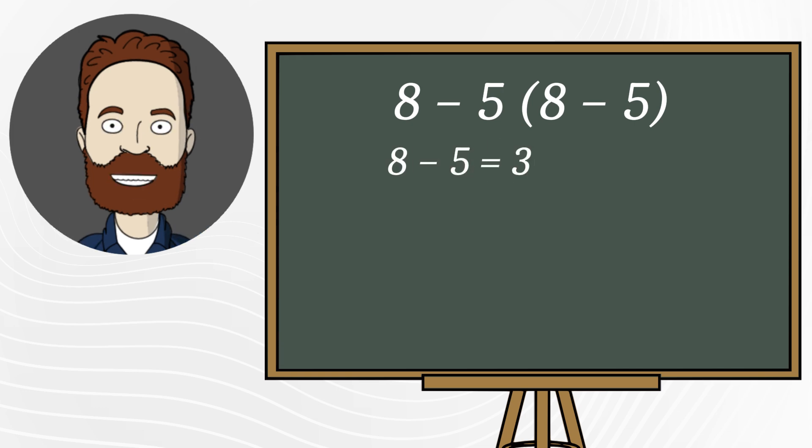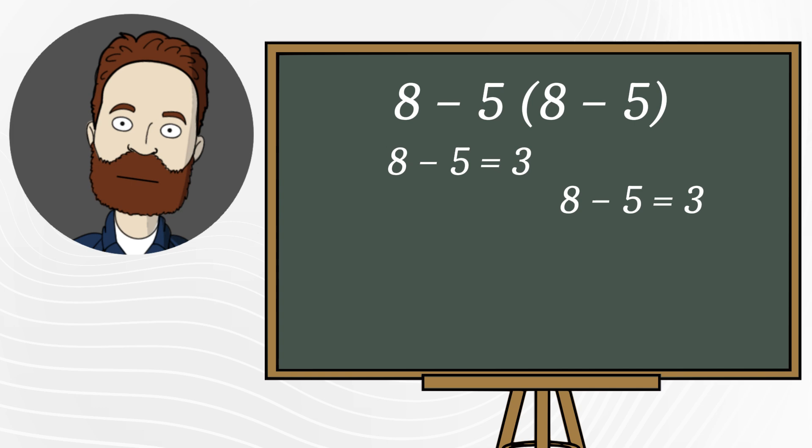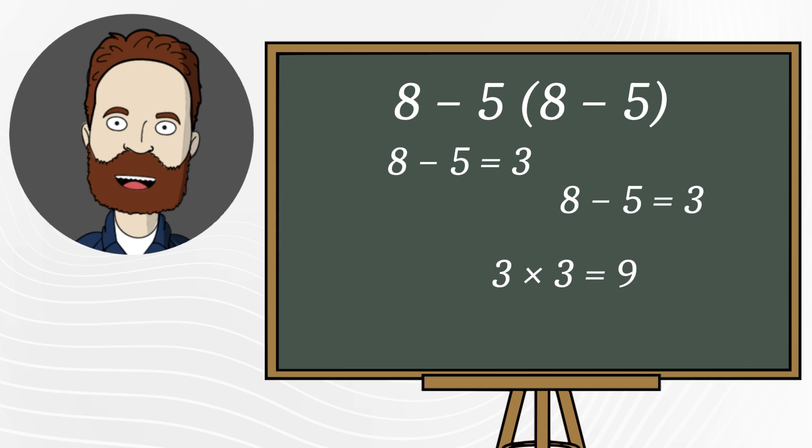Then, they calculate the expression inside the parentheses, 8 minus 5, again 3. And finally, they multiply 3 by 3 and get 9. It seems logical, but that's not the correct answer.